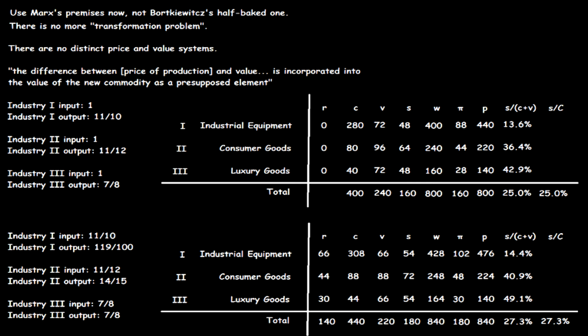Thus, total C increases from 400 to 440 because, although the same 400 units of means of production are again employed, they now cost 440 instead of 400. Similarly, total V falls from 240 to 220, although workers once again receive 240 units of their means of subsistence, because these means of subsistence now cost 220 instead of 240. After advancing the sums of value sufficient to obtain the same inputs as before but at these new prices, capitalists have residual proceeds — which Marx calls revenue, here denoted as R — left over from the sale of period 1's outputs.